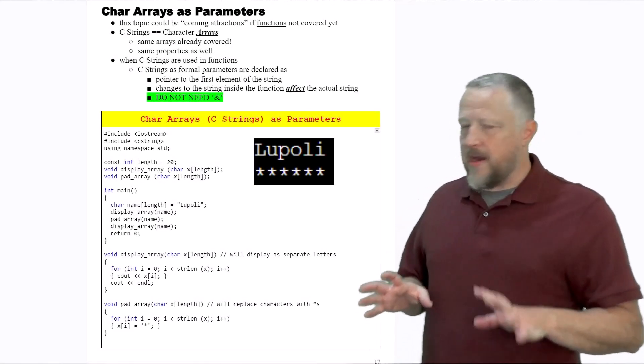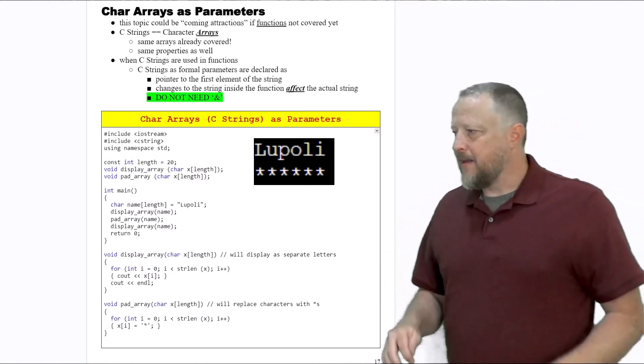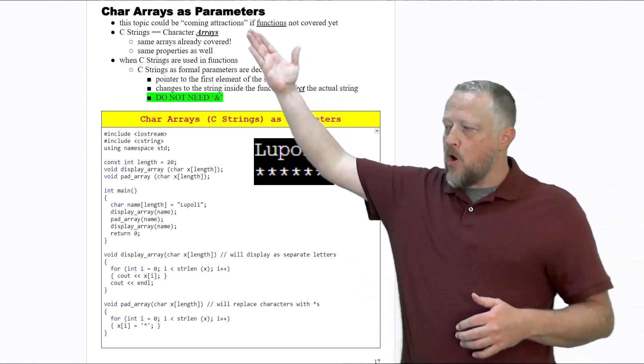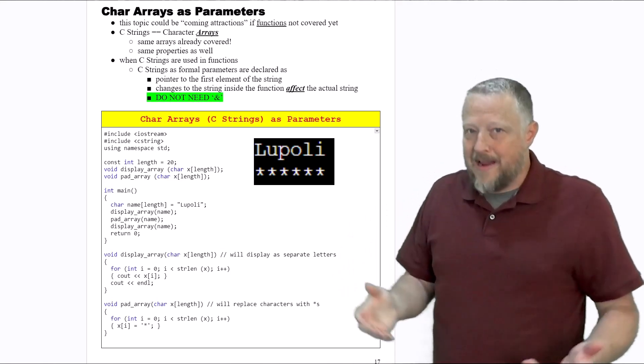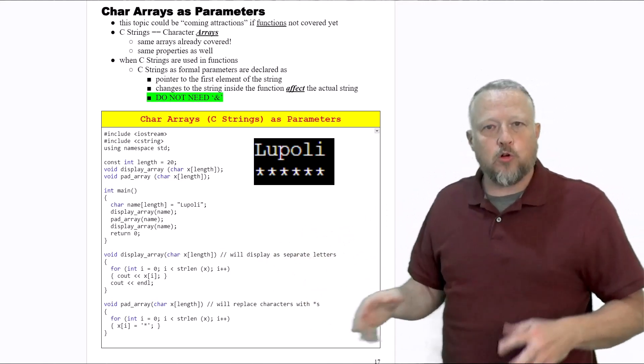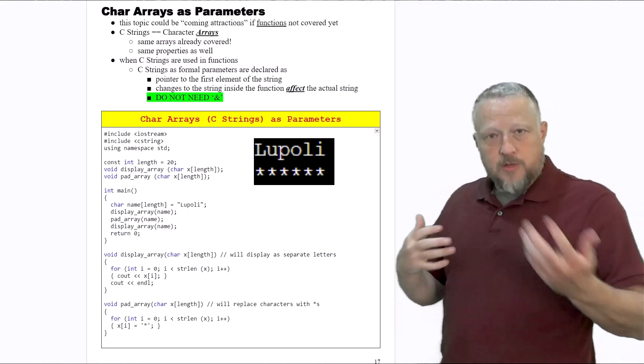There's a lot going on in this page that we're looking at. Remember that C-strings are character arrays, and we've already talked about arrays, looked at for loops when associated with arrays, especially if you've been with me.